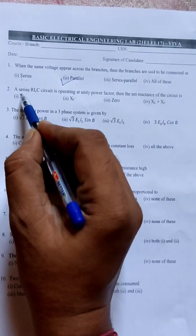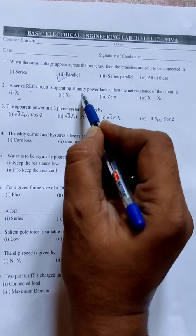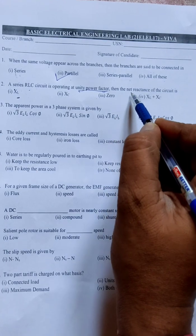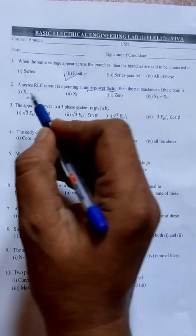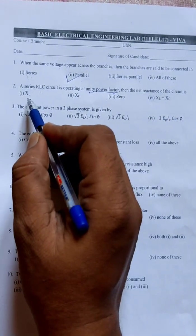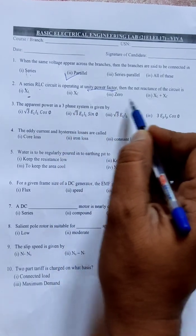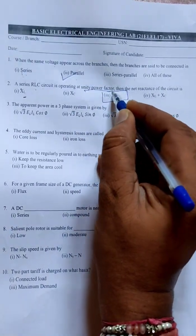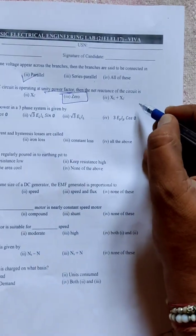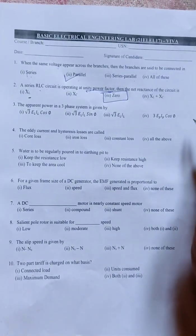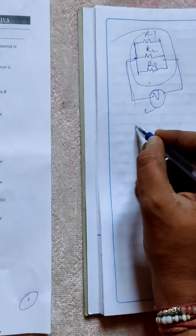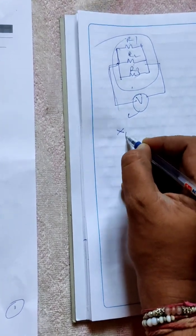Next question: A series RLC circuit is operating at unity power factor. Keep in mind unity power factor. Then the net reactance of the circuit is: option 1 XL, XC, zero, or XL minus XC. The correct option is zero.